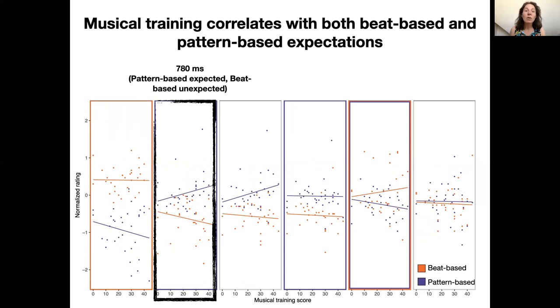In line with this, at 1200 milliseconds, which was on the beat, we find a positive association between musical training and the ratings in the beat-based condition. However, the relationship was absent in the pattern-based condition, while this position was also expected based on the pattern. This again suggests that the effects of the pattern subsided earlier than those of the beat, also for musically trained participants.